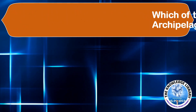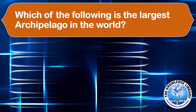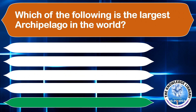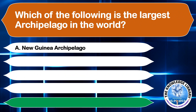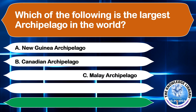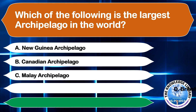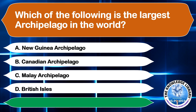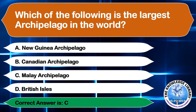Which of the following is the largest archipelago in the world? A. New Guinea Archipelago, B. Canadian Archipelago, C. Malay Archipelago, or D. British Islands. The correct answer is option C, Malay Archipelago.